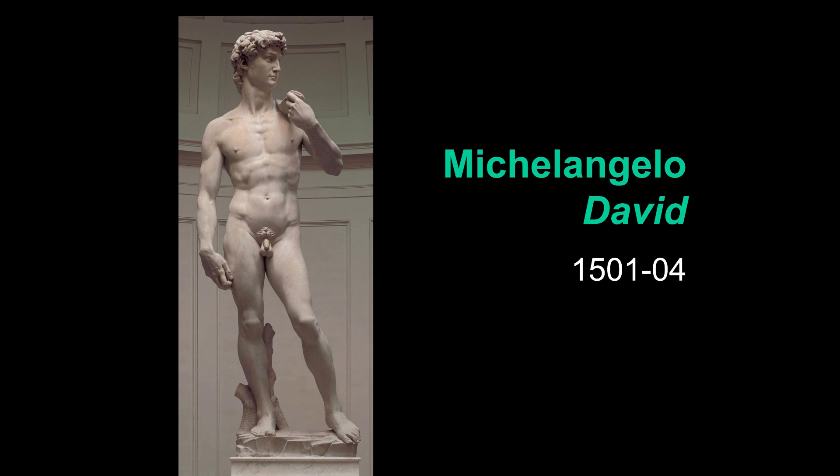The block from which he carved David was a spoiled block. Another artist, Agostino di Duccio, had started carving on it in the 15th century, then found a flaw in the marble and abandoned the block. Since blocks of marble are pretty expensive, it was given to Michelangelo to see what he could do with it, and he was able to avoid the flaw and carve this statue.